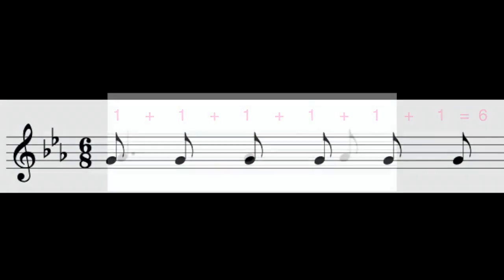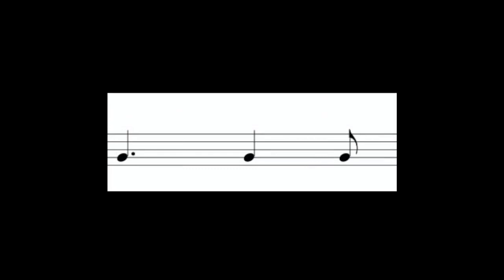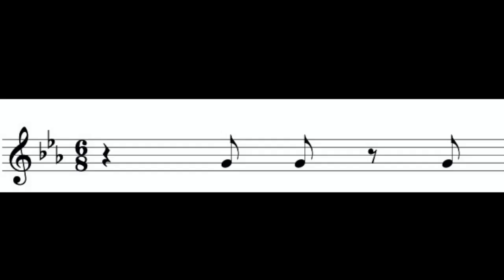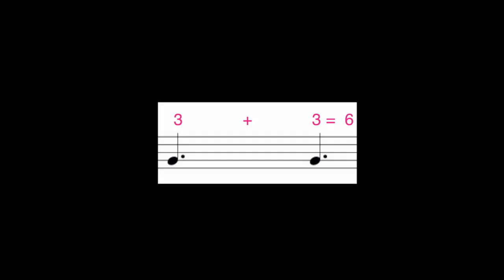In the next measure, we have a dotted quarter note which is a total of three beats. Remember, it's six eight, so the next beat is a quarter note — eighth notes get one beat, quarter notes get two beats — so two beats plus the following eighth note is a total of six beats. In the next example, we have a quarter rest followed by an eighth note for a total of three beats, then an eighth note, eighth rest, eighth note for another three beats — three plus three equals six. This is followed by two dotted quarter notes, each getting three beats, for three plus three equals six.